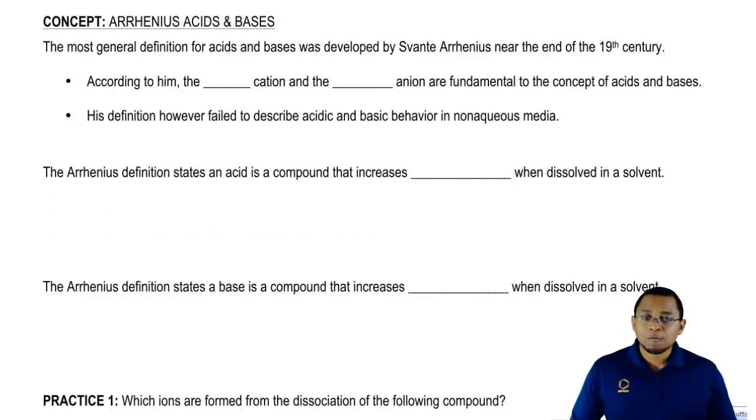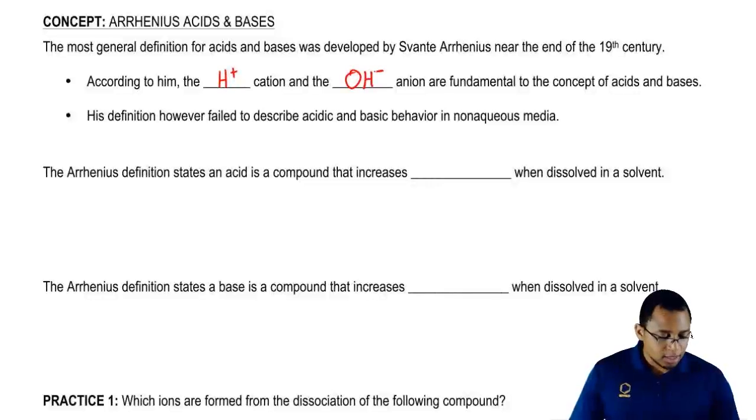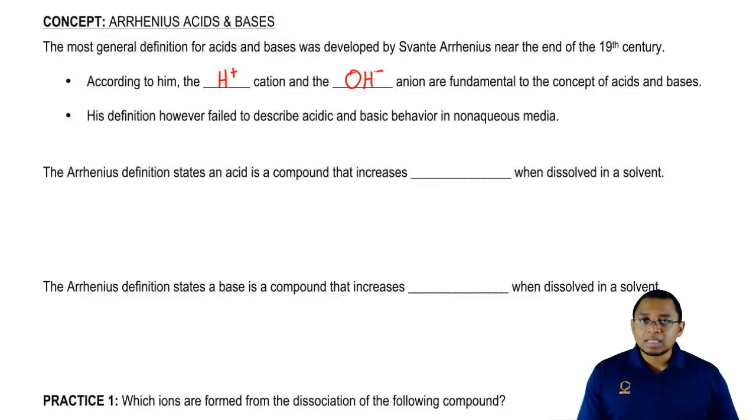The first one being Arrhenius. The most general definition for acids and bases was developed by Arrhenius near the end of the 19th century. According to him, the H plus cation and the OH minus anion were the fundamental pieces that help to identify acids and bases.